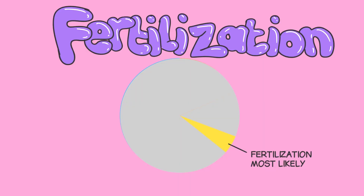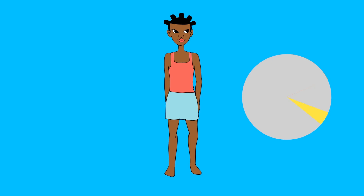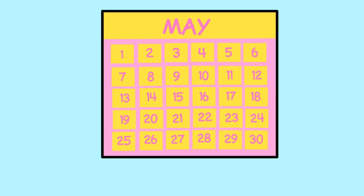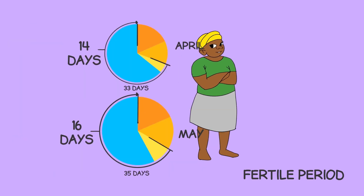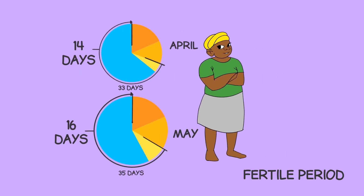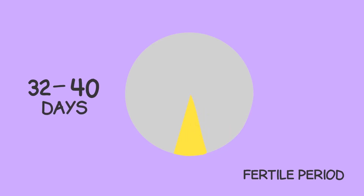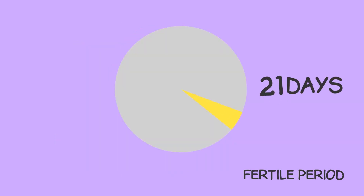Fertilization of the egg, which leads to pregnancy, takes place after ovulation. The time when unprotected sex may potentially lead to pregnancy — also known as the fertile period — starts around 15 to 21 days before menstruation begins, depending on the person and the cycle. This means that if you have a longer cycle, say 32 to 40 days, the fertile period will not be in the middle of your cycle, but later. And if you have a shorter cycle, say 21 days, the fertile period will be before the middle of your cycle.